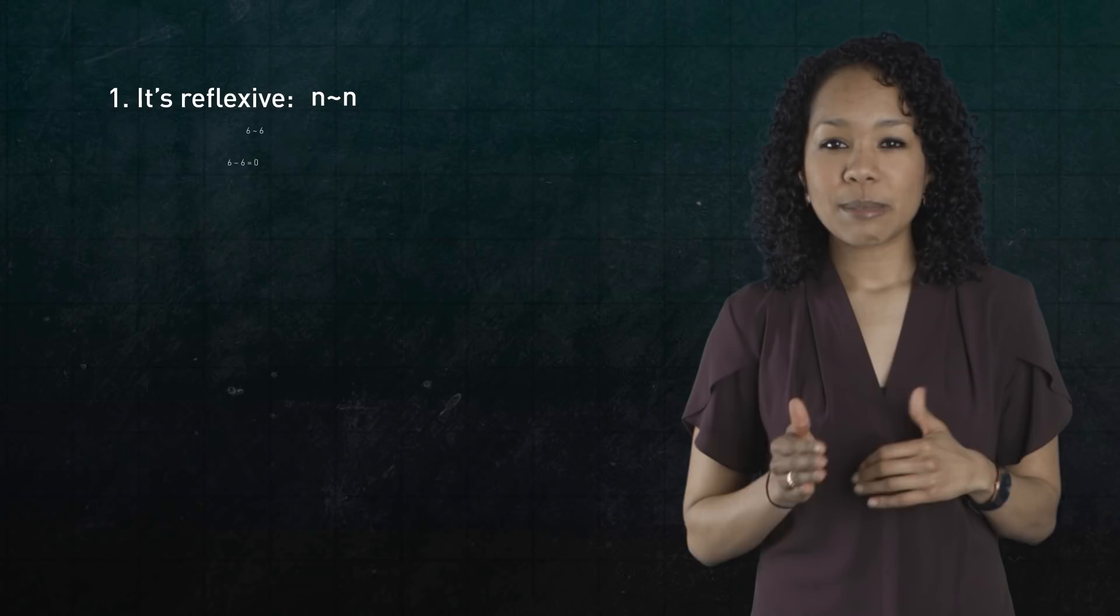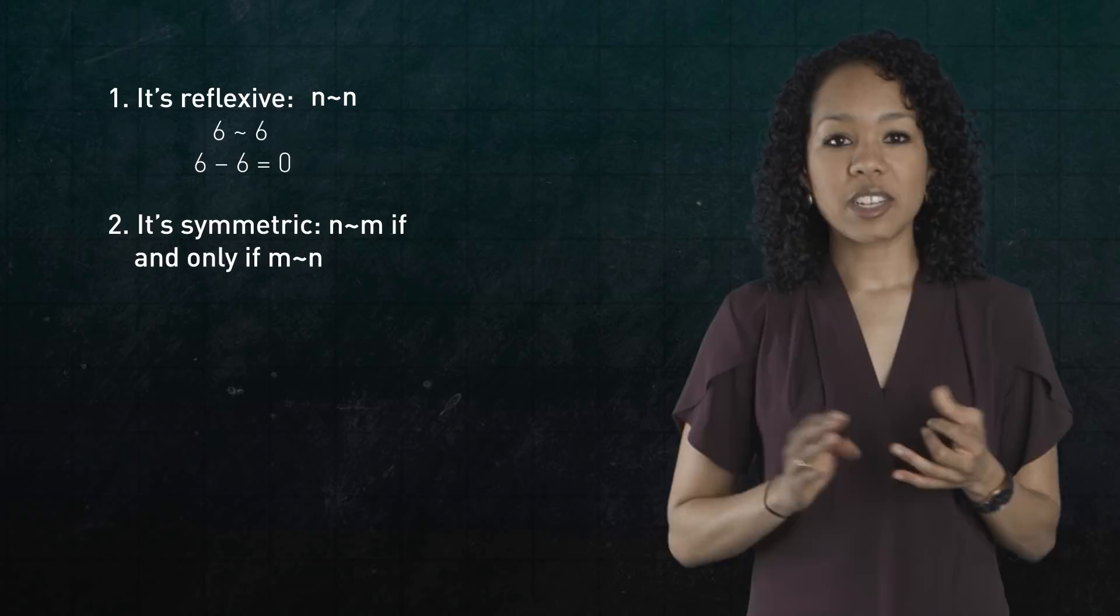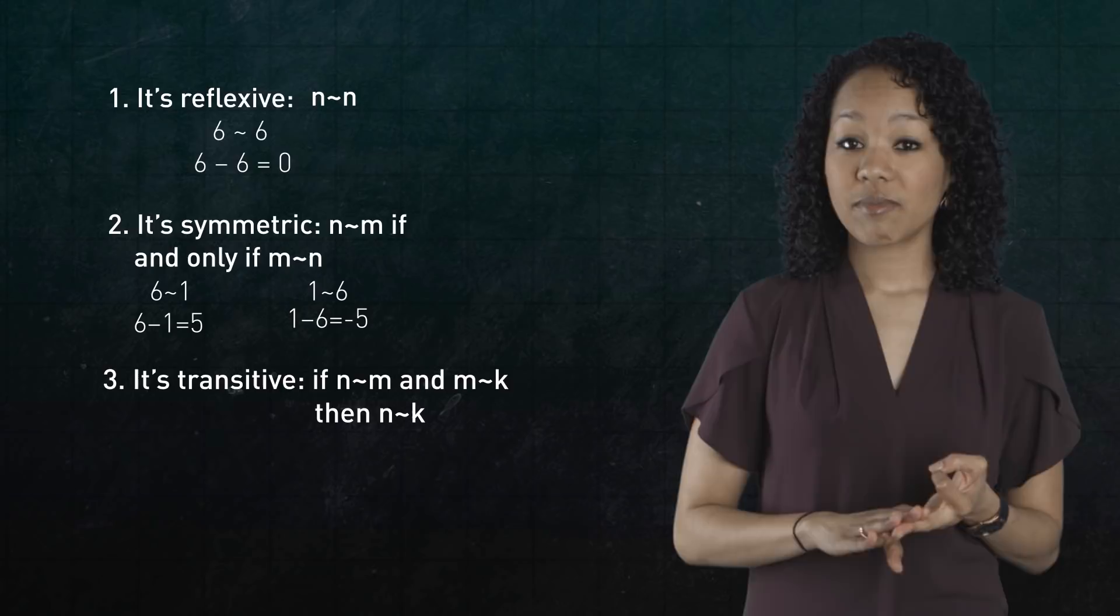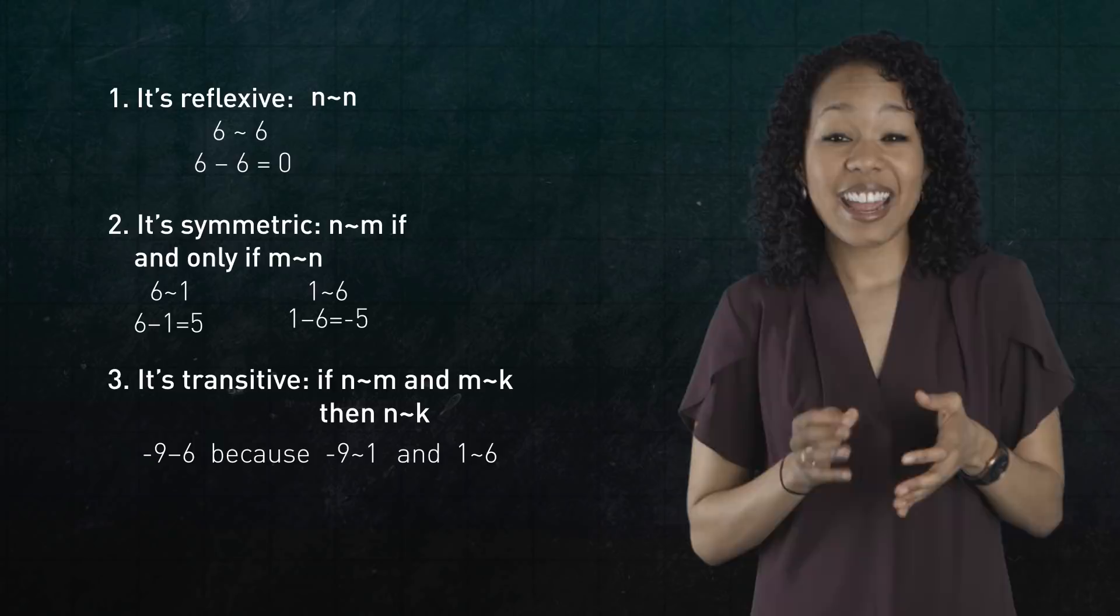It's reflexive, that is, every integer relates to itself. For example, 6 minus 6 is 0, which is divisible by 5. The relation is symmetric. For example, 6 relates to 1 and 1 relates to 6. And it's transitive. Example, negative 9 relates to 6 because negative 9 relates to 1 and 1 relates to 6.